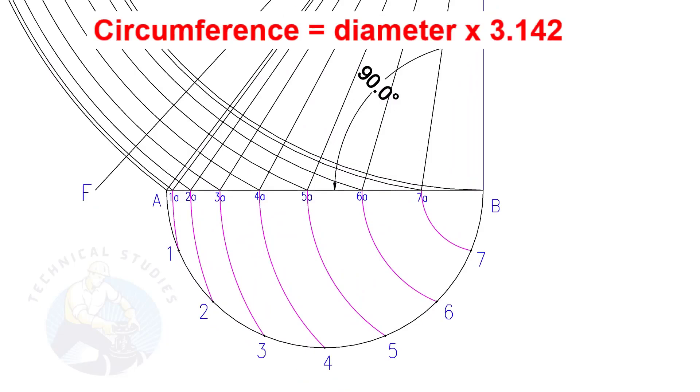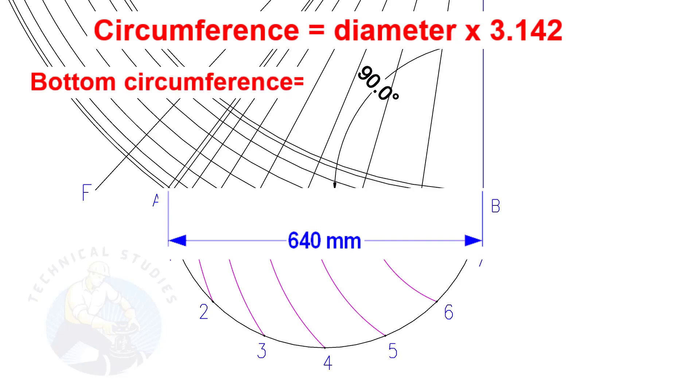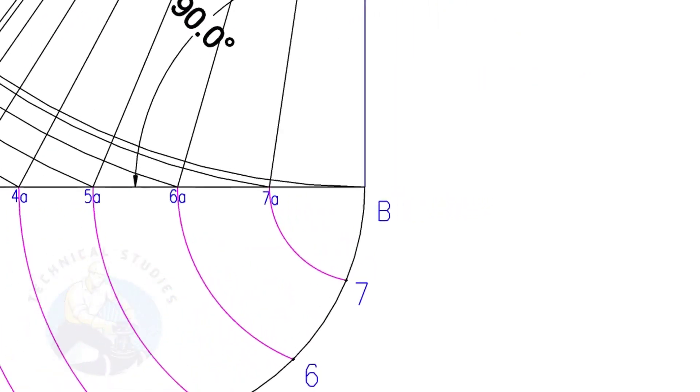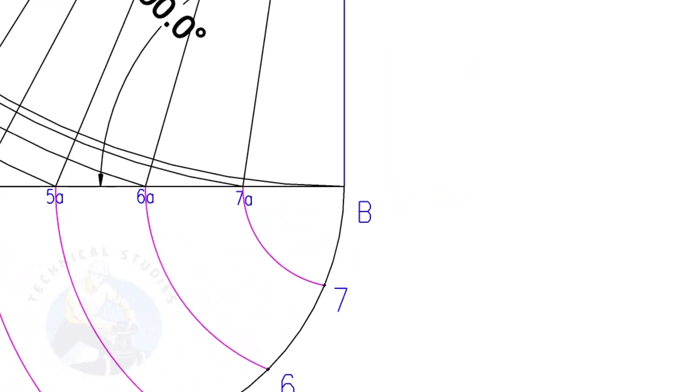Let us calculate the circumference of the bottom side. The formula is diameter multiplied by 3.142. Since the diameter is 640, multiply it by 3.142. The answer is 2010.8 mm. To calculate the arc length of one segment, divide the circumference 2010.8 by 16. The length of one arc is 125.68 mm.